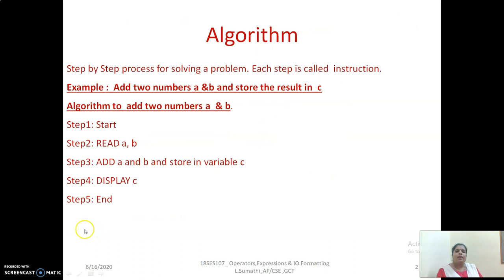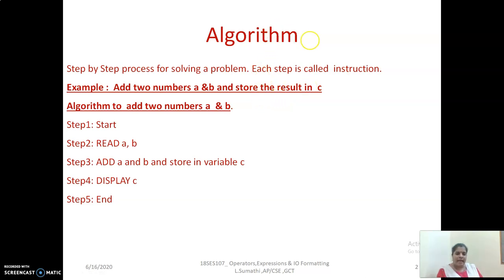Next we will see what is an algorithm. Before we start writing any program we need to first write the algorithm and flowchart, and then go for programming - in the case of structured programming. C is a structured programming language. An algorithm is a step-by-step process for solving a problem, and each step is called an instruction. We will see an example where we have to write an algorithm for adding two numbers A and B and storing the result in C.